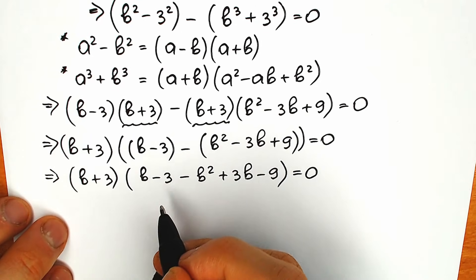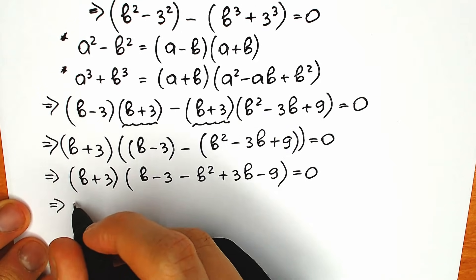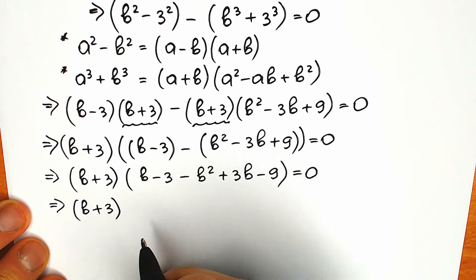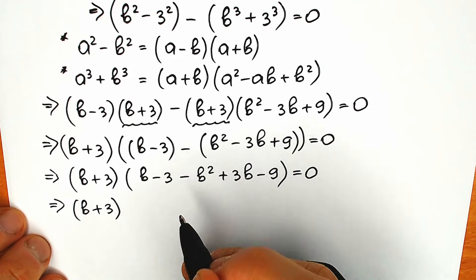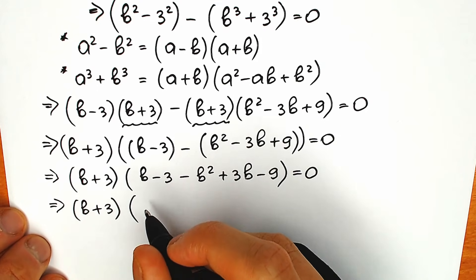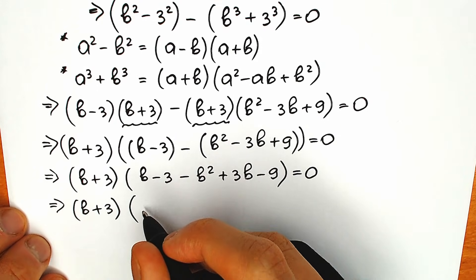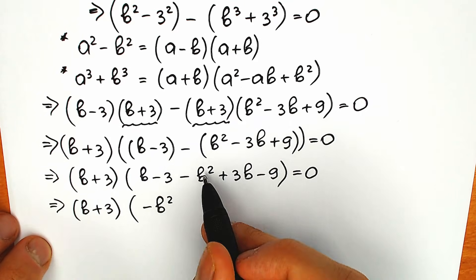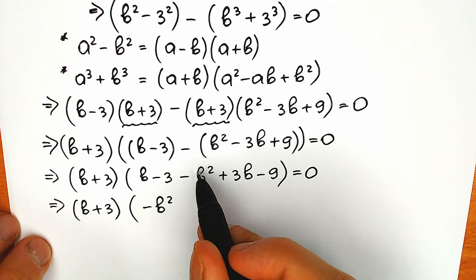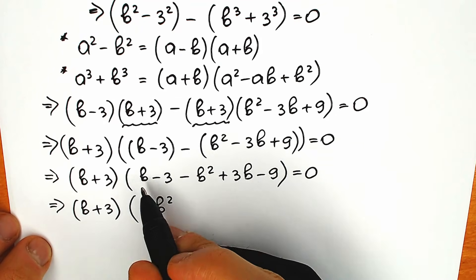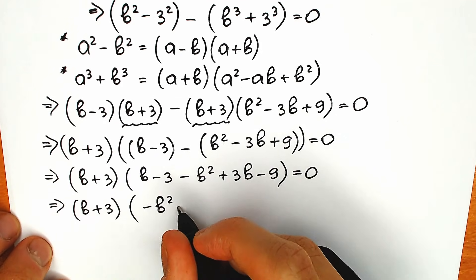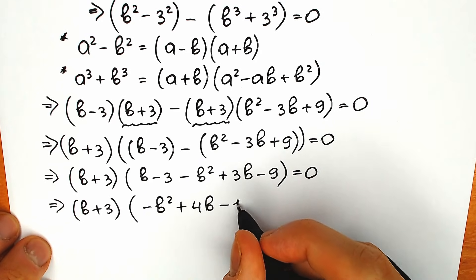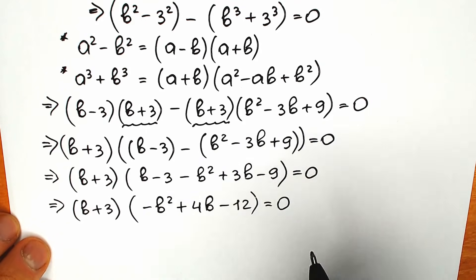Now let's group all of this together inside the second factor. We need to order the terms — it looks like a quadratic equation with a square, a b, and a constant. So: minus b squared first, then b plus 3b gives plus 4b, and minus 3 minus 9 gives minus 12. So we have (b plus 3)(minus b squared plus 4b minus 12) equal to 0.